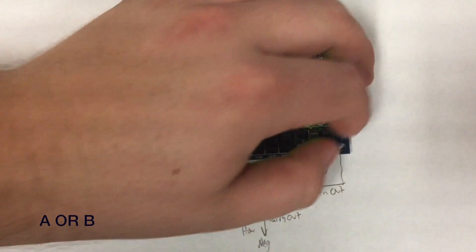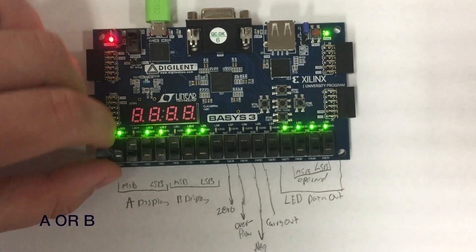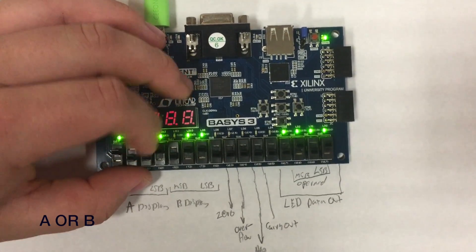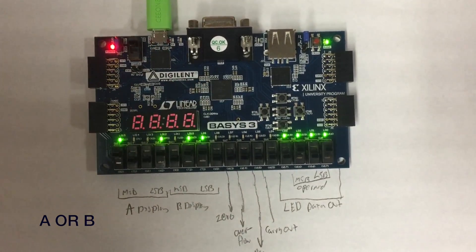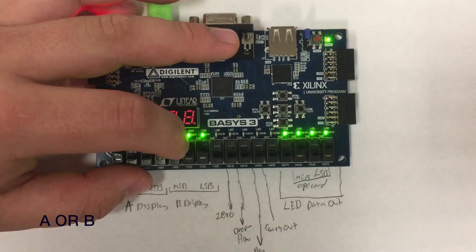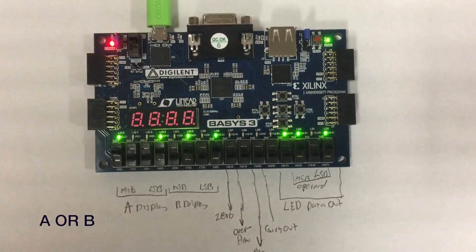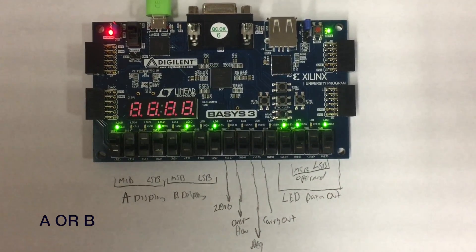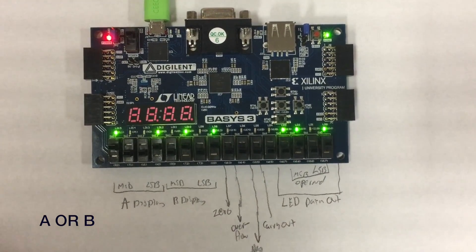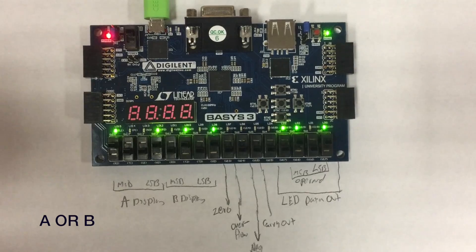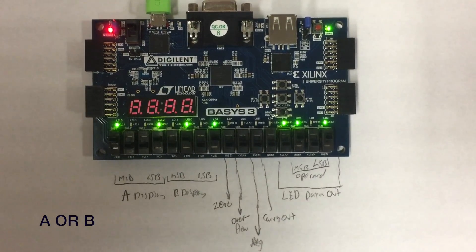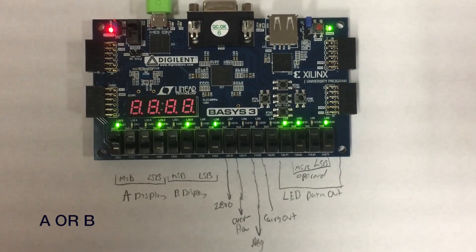Our next operand will be a OR b, which is 1 0 1. The numbers we will be using are a is 1 0 0 1 and b will be 0 1 0 1. In an OR operation, if anything is 1 it will output a 1, so we are outputting 1 1 0 1. For the second bit, LED 1, we have two zeros which will output a zero.